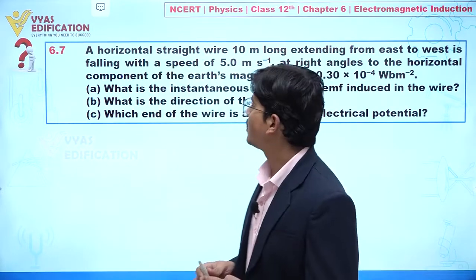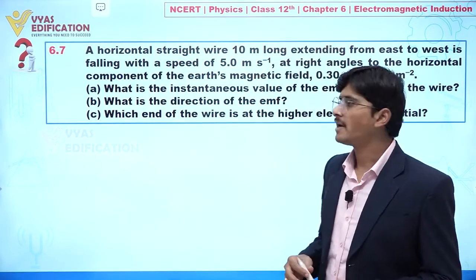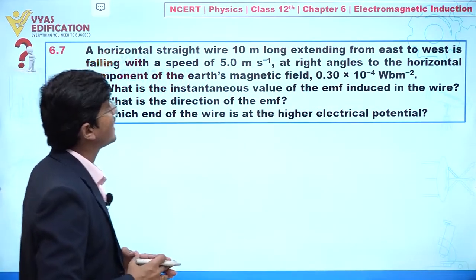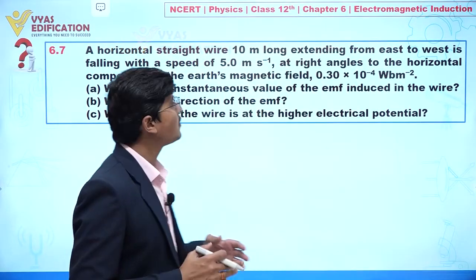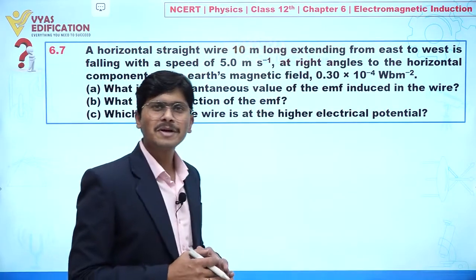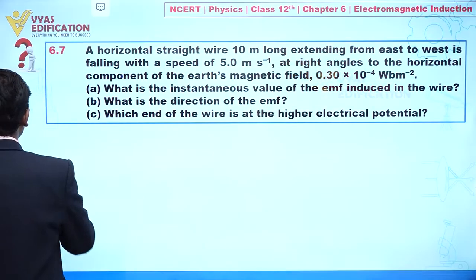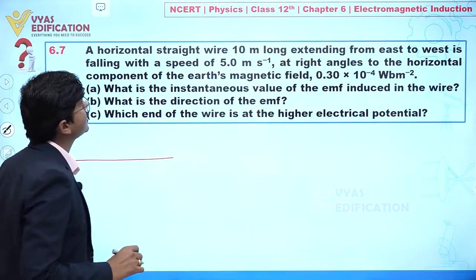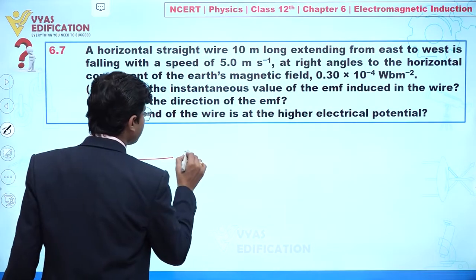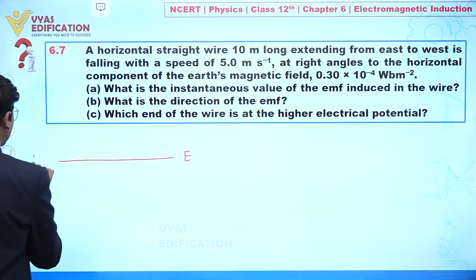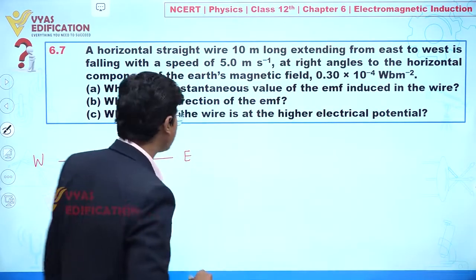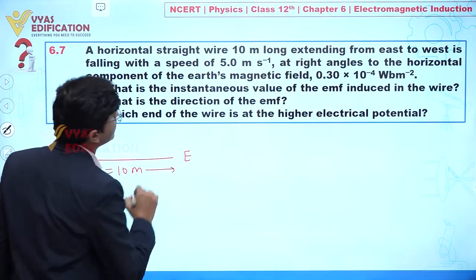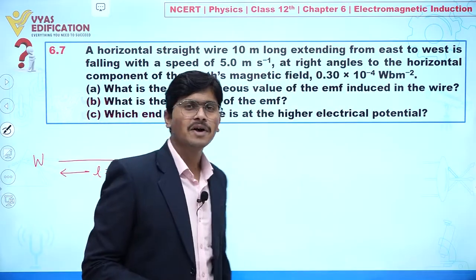We are going to discuss question number 6.7. In this question, a horizontal straight wire 10 meters long extending from east to west is given. Let's suppose this is the horizontal straight wire — this direction is east and this one is west. The length of this wire is given as l = 10 meters.